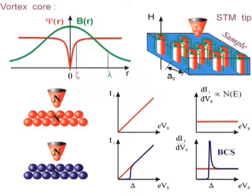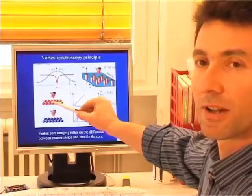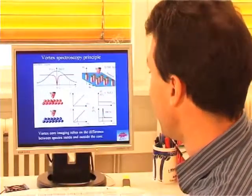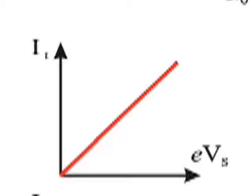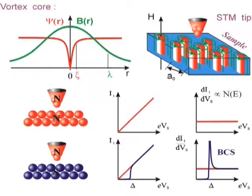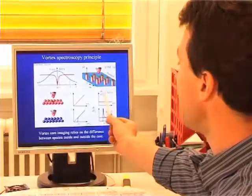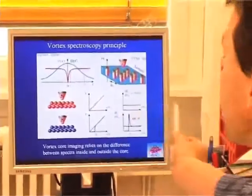In the case of a normal tip and a normal sample, you expect a linear IV characteristic significant of a metallic device and the conduction, the conductance, which is the derivative of the current versus the voltage, is almost flat.